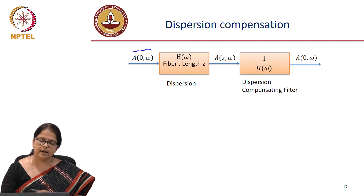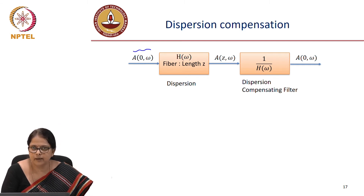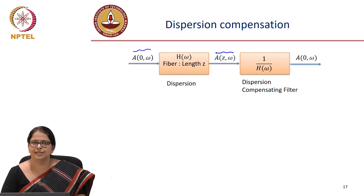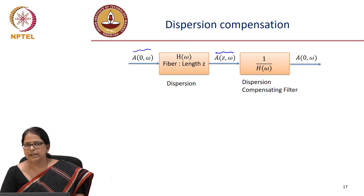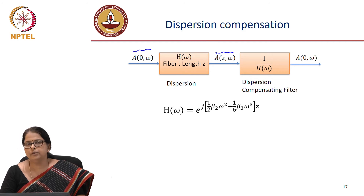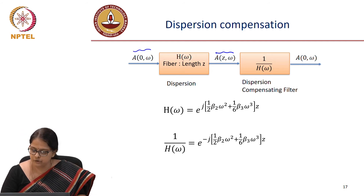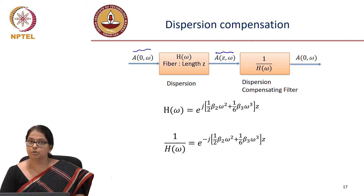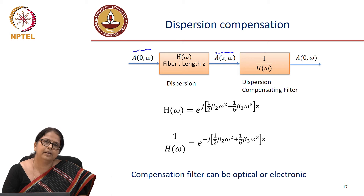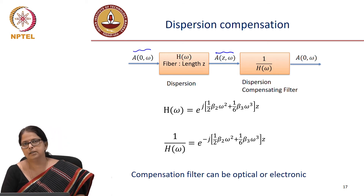The original signal has a frequency content a 0 omega; it undergoes dispersion in the fiber, giving a damaged or dispersed signal. All we need to do is pass it through a filter whose frequency response is 1 over H of omega. This is not very complicated because H of omega is known, so 1 over H of omega is also known — it is just the negative exponential. There are two approaches: optical compensation and electronic compensation.